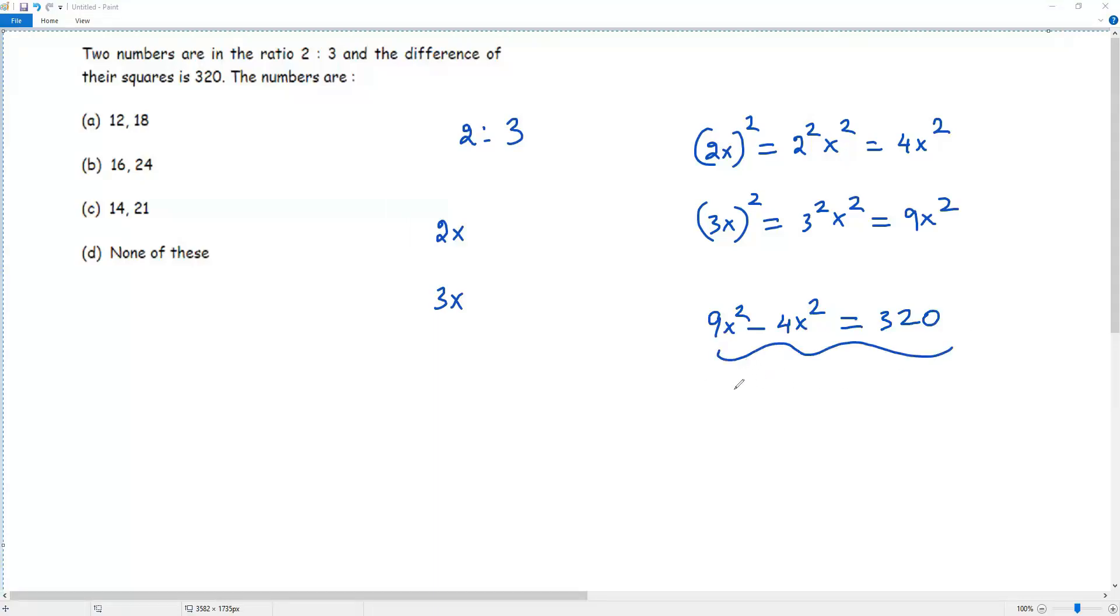So the simplification of 9x square negative 4x square is 5x square equals 320. So I divide both sides by 5. So 5, 5 will cancel. 5 goes into 5, 1 times. 5 goes into 32, 6 times. And 6 times 5 is 30. And we have two left over.